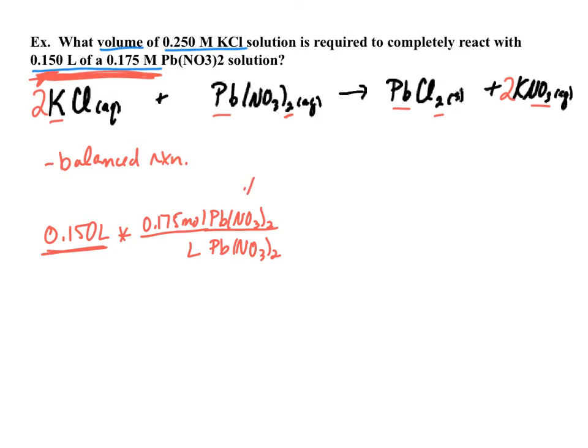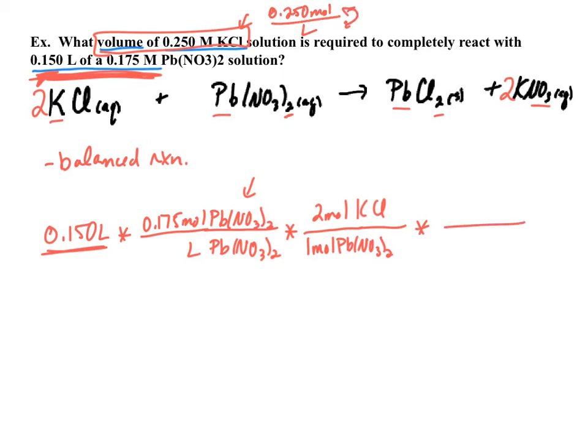Next, this is going to put us in moles of Pb(NO3)2, and we need to know what the relationship is between Pb(NO3)2 and in this case KCl. So for every one mole of Pb(NO3)2 we have two moles of KCl. Now we need to go from moles of KCl into volume of KCl. And we know that this solution is 0.250 moles per liter.